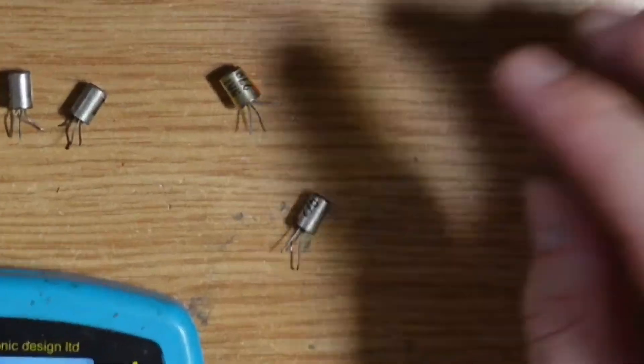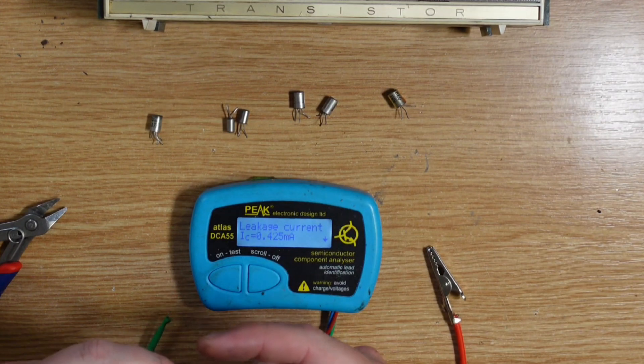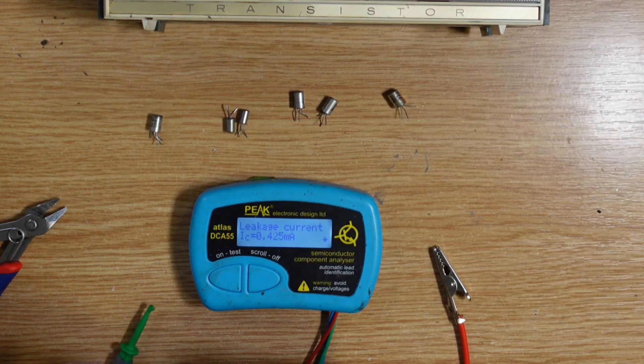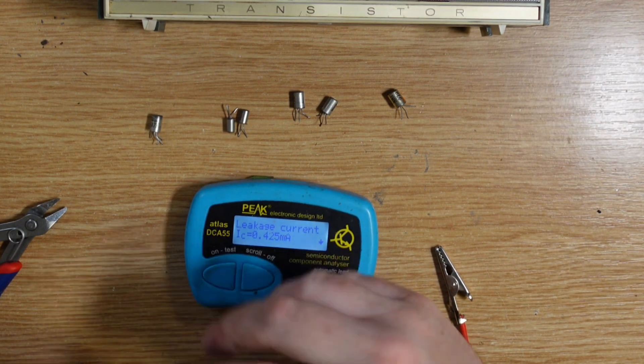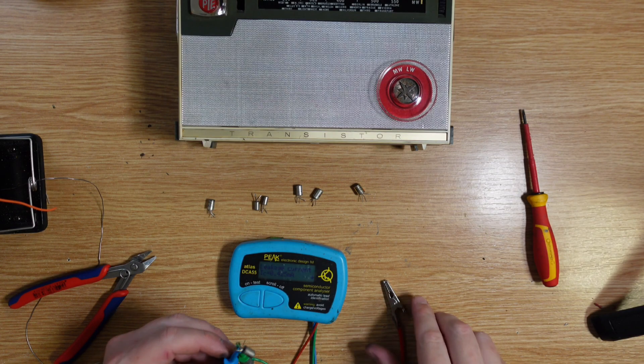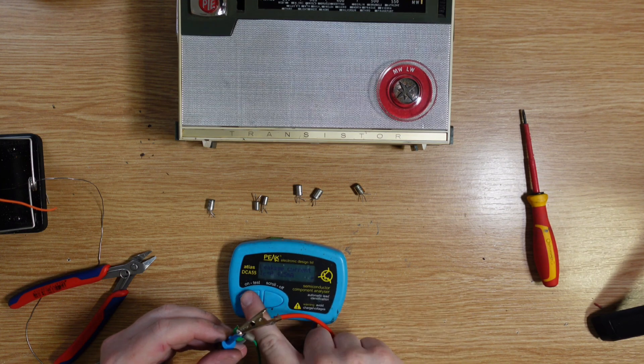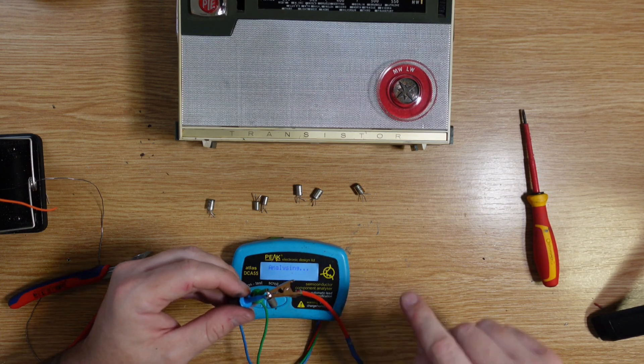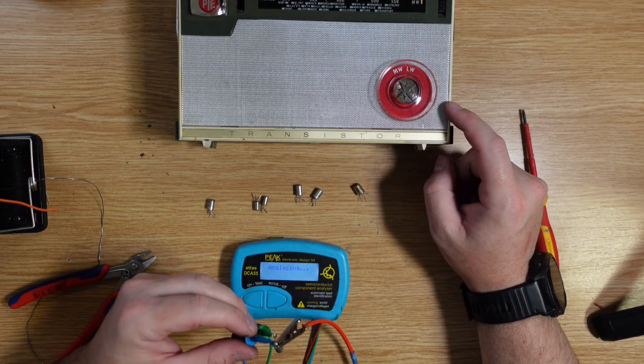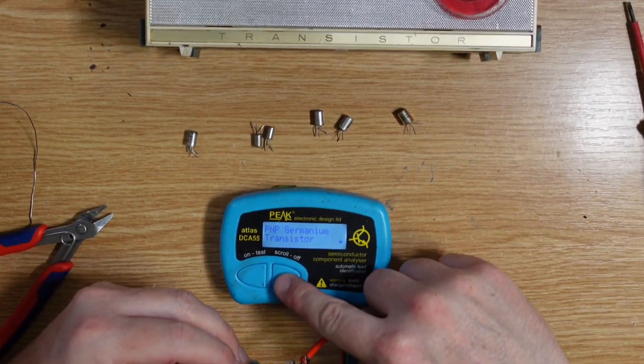And now, the moment of truth. Drum roll please, Maestro. I'm actually quite nervous about this because I have a feeling it's going to be unusable. This is of course the infamous NKT275. The whole reason we searched out this Popliner radio by Pye is to get this transistor. So here we go.